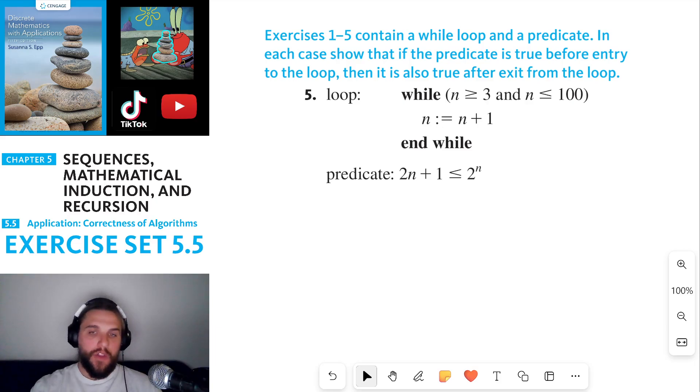So the predicate here is that 2n plus 1 is less than or equal to 2 to the n. We get to assume that this is true before entry to the loop. We are also assuming that we initially satisfy the condition for this loop, which is that n is greater than or equal to 3 and n is less than or equal to 100. We have to determine whether or not this predicate is true after exit from the loop.